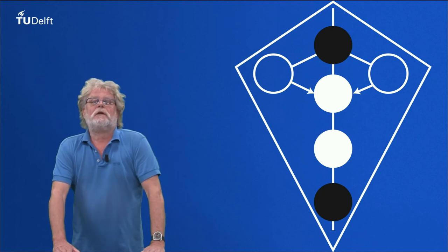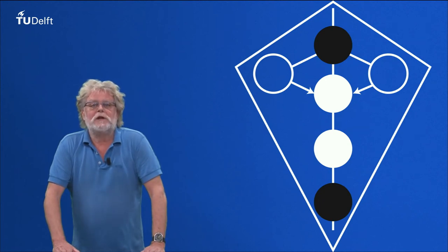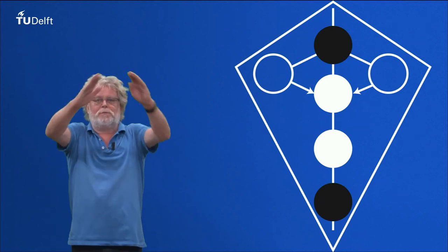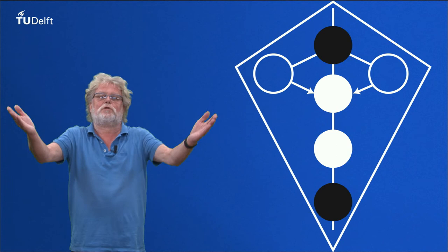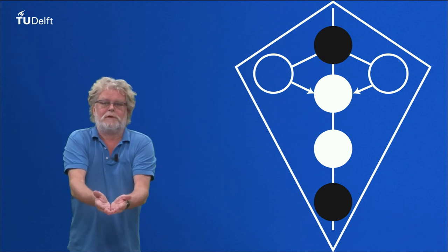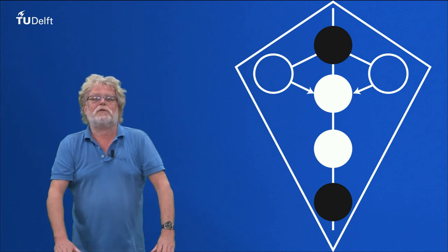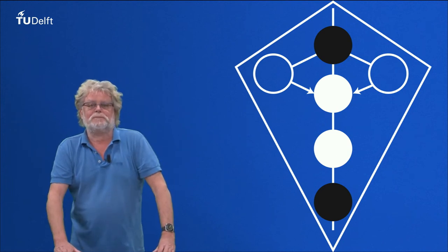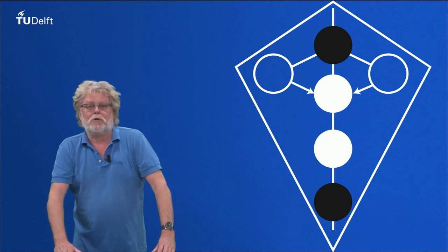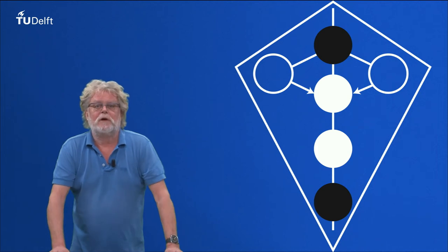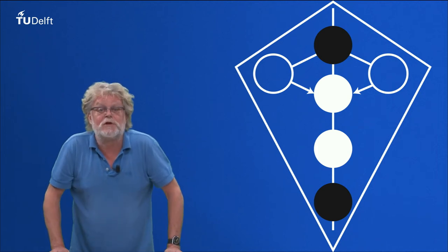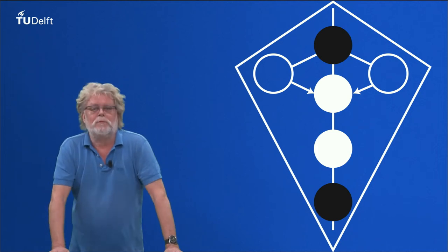Looking at all the stages, you see each time a divergent part followed with a convergent part. This is the classical shape of a creative process. This is enough about the general structure of the DIM model.